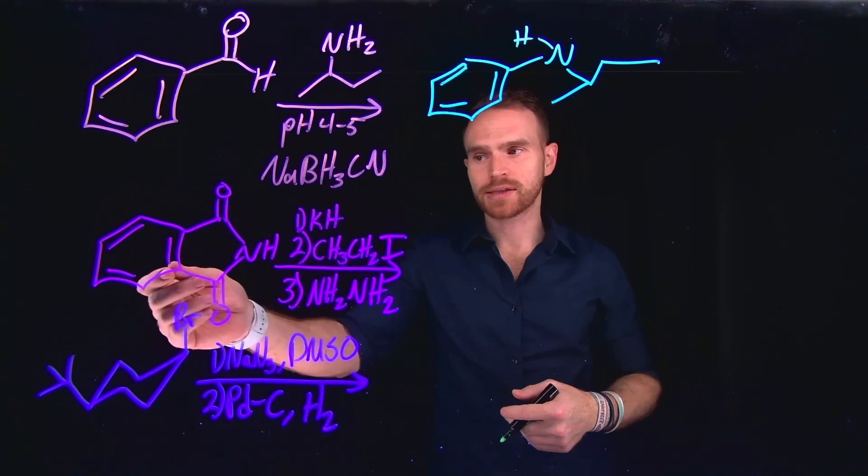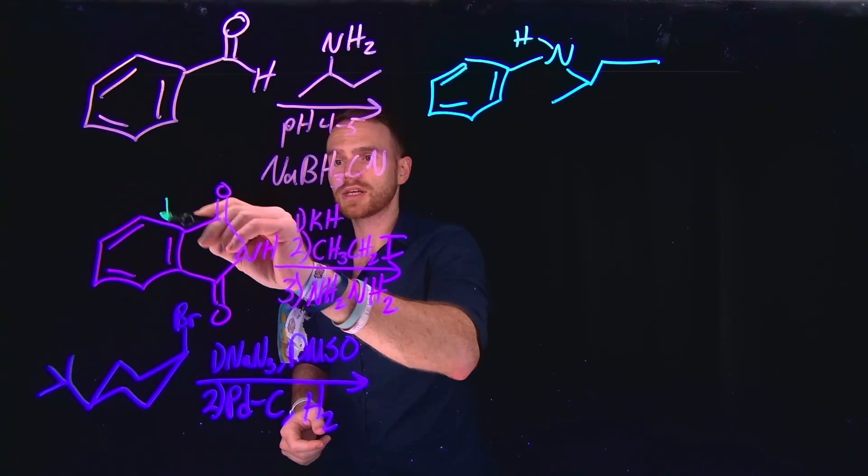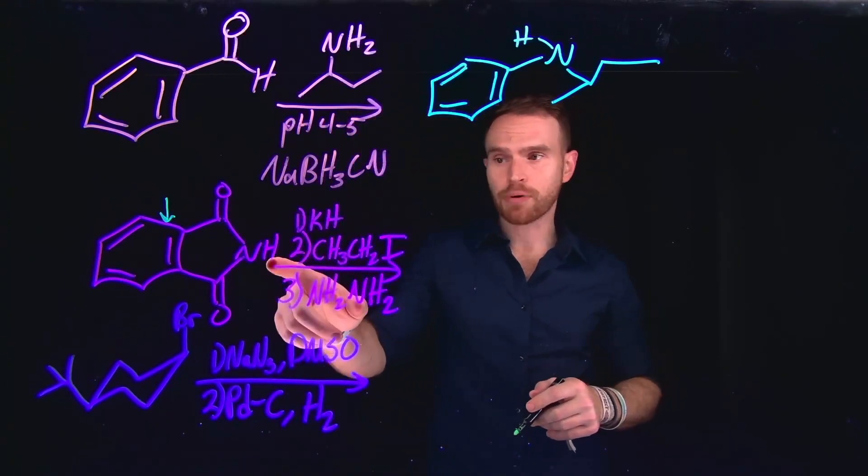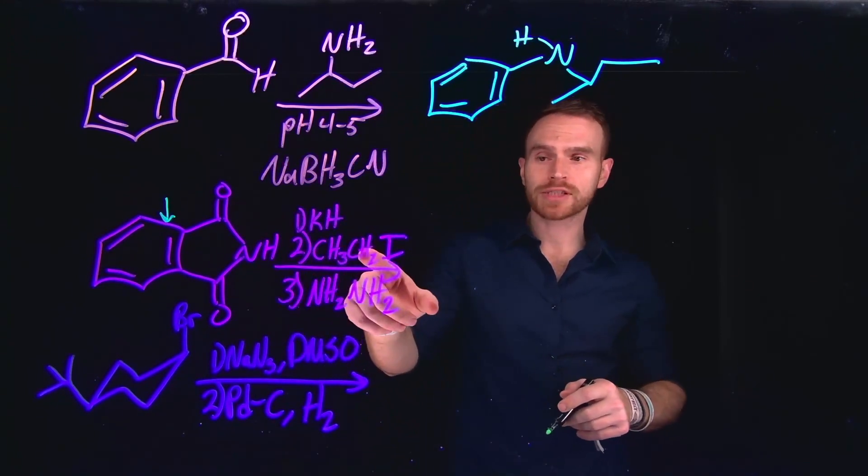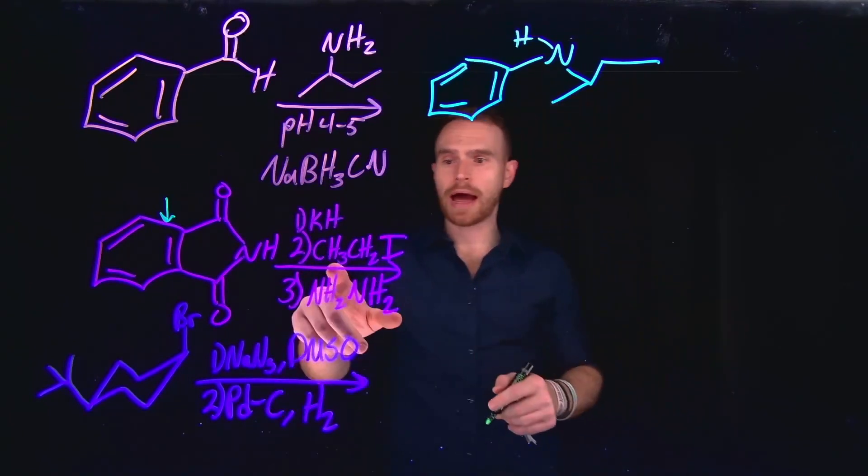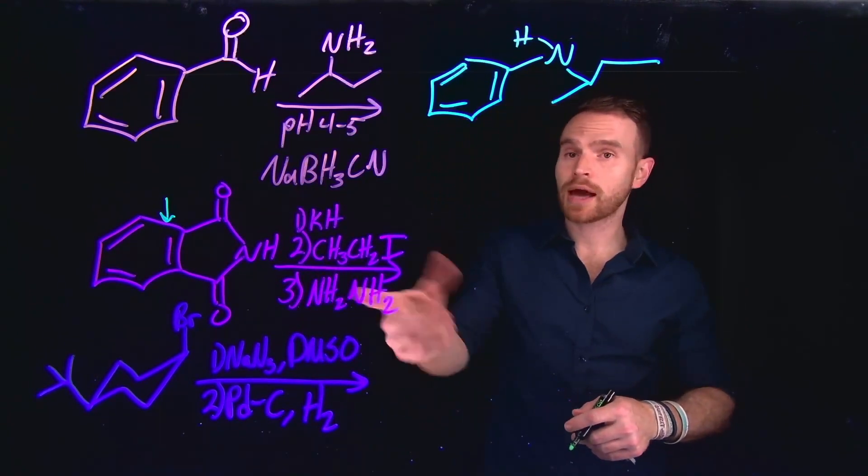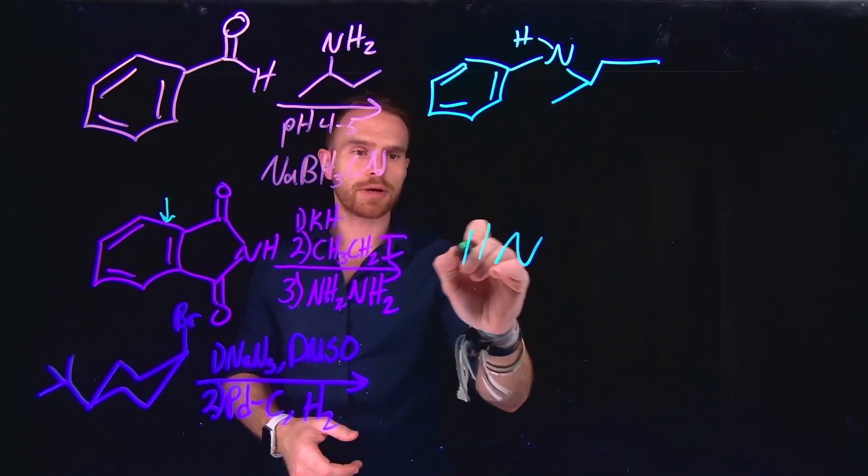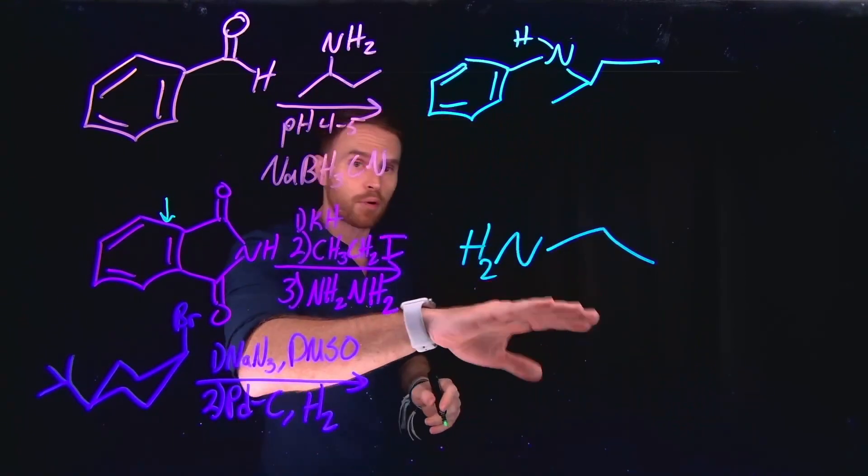Another way that we can synthesize primary amines is called the Gabriel synthesis, where you're using this molecule, which is called phthalimide. In the presence of a strong base, you'll deprotonate this nitrogen to hydrogen bond, which will then subsequently undergo substitution with an alkyl halide. So therefore, afterwards, we will reduce or liberate the primary amine using hydrazine, which is NH2NH2. And this will generate our new primary amine. So again, this is called the Gabriel synthesis, and this would be the product of that reaction.